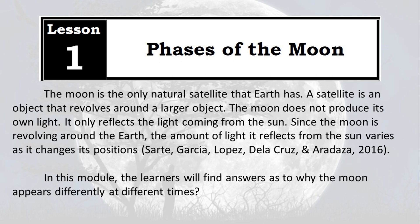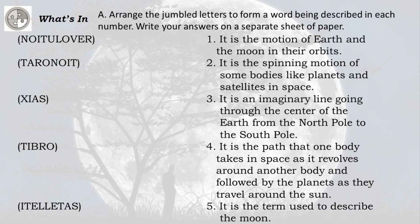Lesson 1: Phases of the Moon. The moon is the only natural satellite that Earth has. A satellite is an object that revolves around a larger object. The moon does not produce its own light — it only reflects the light coming from the Sun. Since the moon is revolving around the Earth, the amount of light it reflects from the Sun varies as it changes its positions. In this module, learners will find answers as to why the moon appears differently at different times.